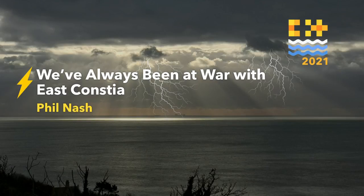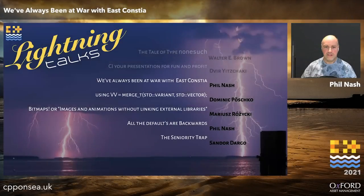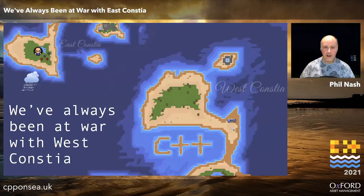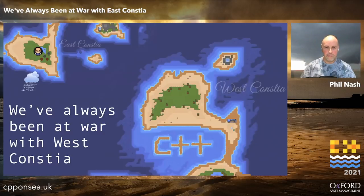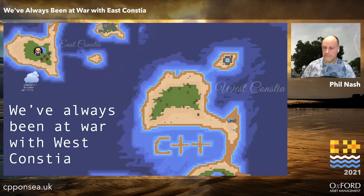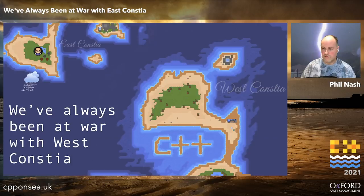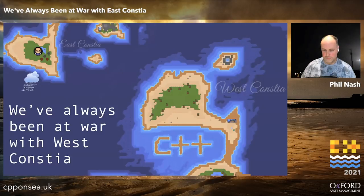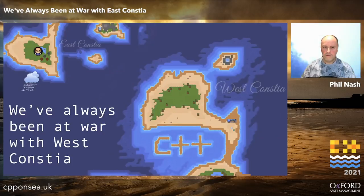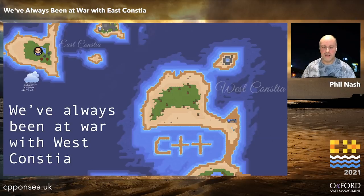Let's move on — we've always been at war with East Constia, so I don't even need to change the screen because it's coming up on the next slide. If you've been to the Gather Town venue, you've probably come across West Constia and East Constia. These are plays on the East Const thing we've had going on for a few years. John Cowell did a blog post and then a lightning talk on East Const, and I followed up with my own lightning talk — which this is a version of — riffing off that and taking it a little bit further.